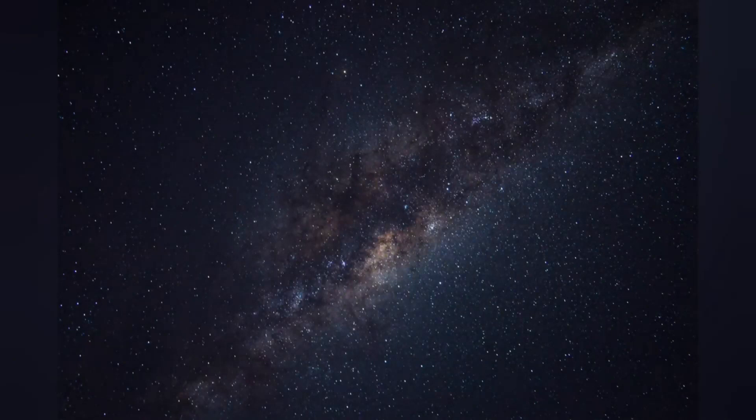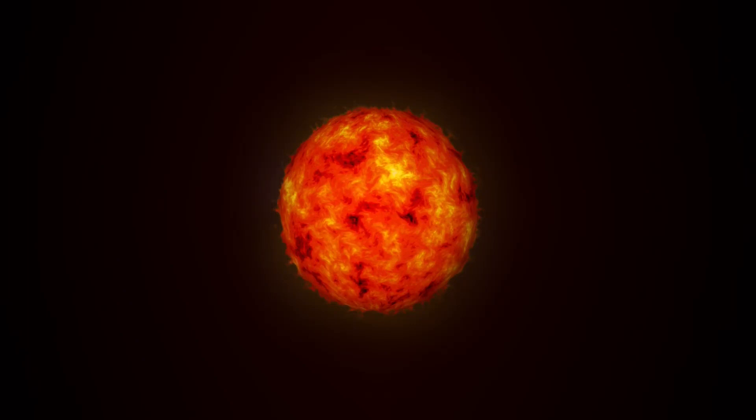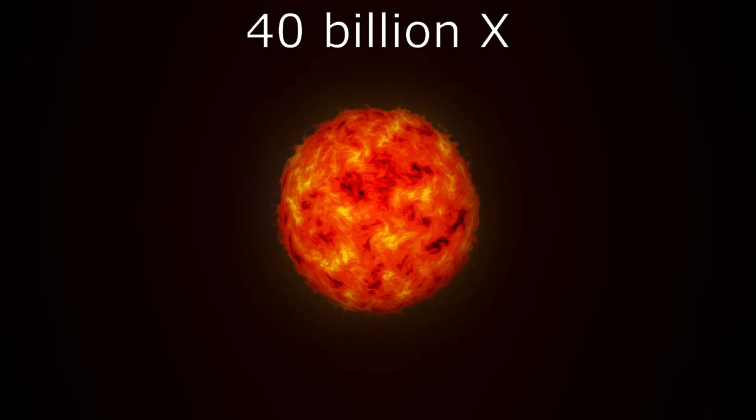The biggest black hole discovered so far weighs in at 40 billion times the mass of the sun, or 20 times the size of the solar system. Whereas the outer planets in our solar system orbit once in 250 years, this much more massive object spins once every three months. Its outer edge moves at half the speed of light.